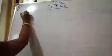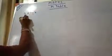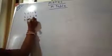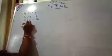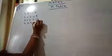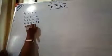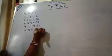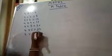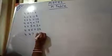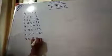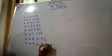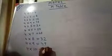First of all, 4's table. 4, 1's are 4. 4, 2's are 8. 4, 3's are 12. 4, 4's are 16. 4, 5's are 20. 4, 6's are 24. 4, 7's are 28. 4, 8's are 38. 4, 9's are 36. 4, 10's are 40.